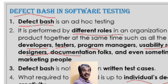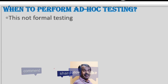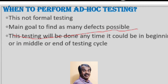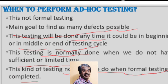Ad hoc testing is unscripted and informal, with no test plan or test cases followed. The main goal is to find as many defects as possible. It can be done at the beginning, middle, or end of the testing cycle, especially when time is limited or after formal testing is complete.